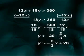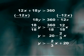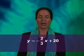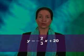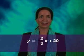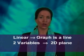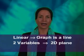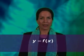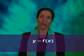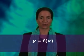Let's use what we know about linear equations to understand the meaning of this inequality. The related equation, y equals negative two-thirds x plus 20, is a linear relationship between two variables, so its graph is a line in a two-dimensional plane. We call y f of x, or a function of x, since y changes as x changes.